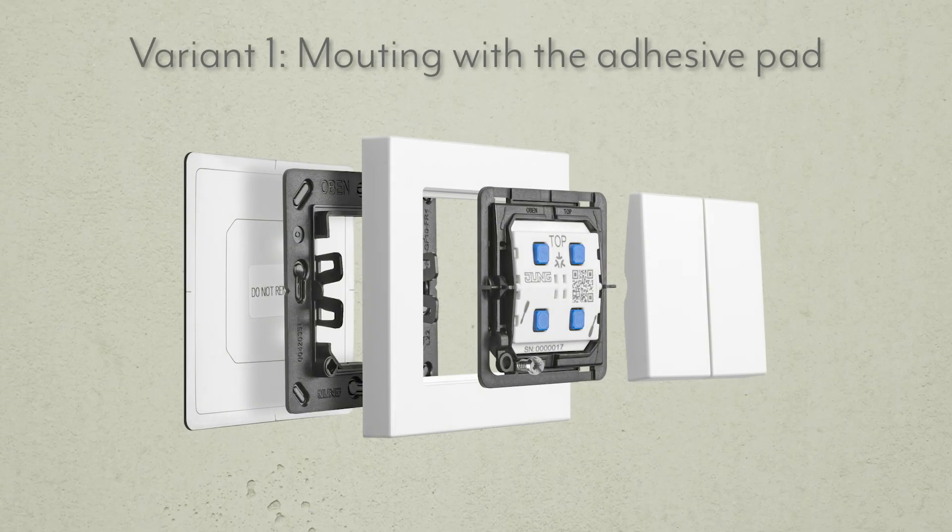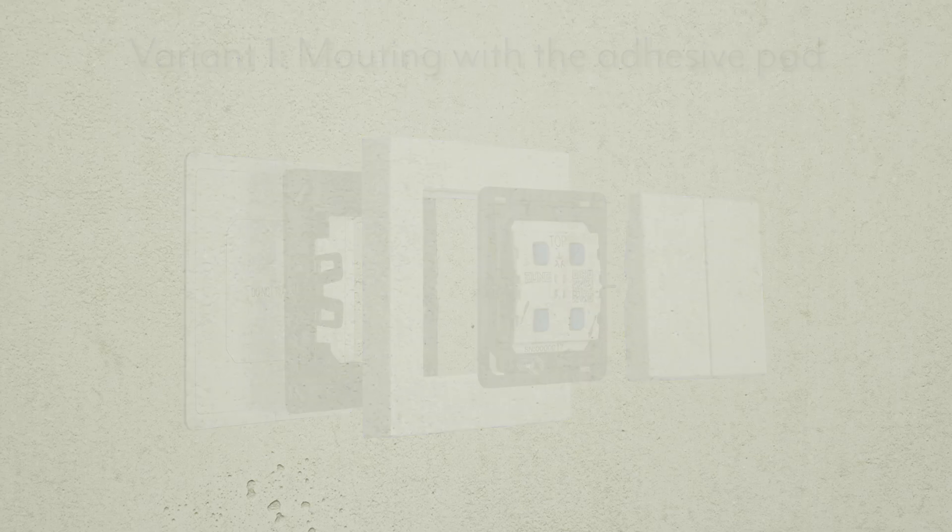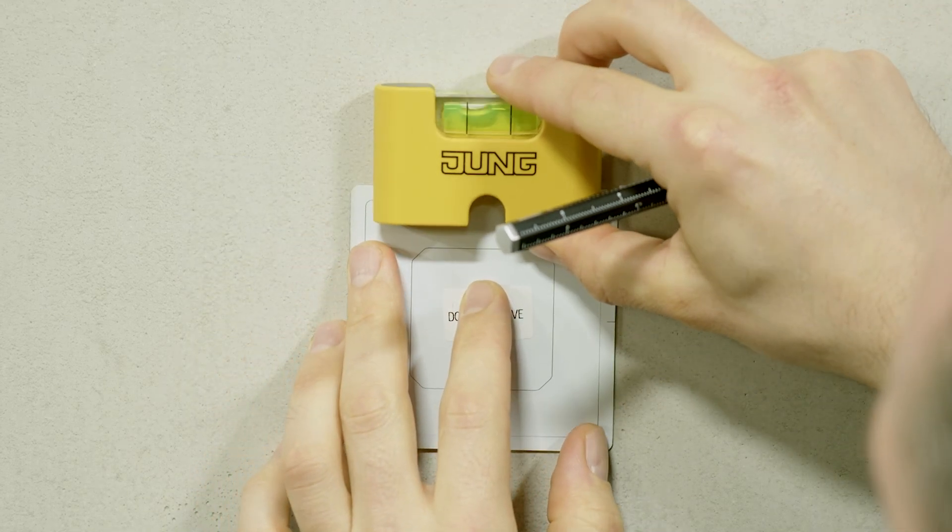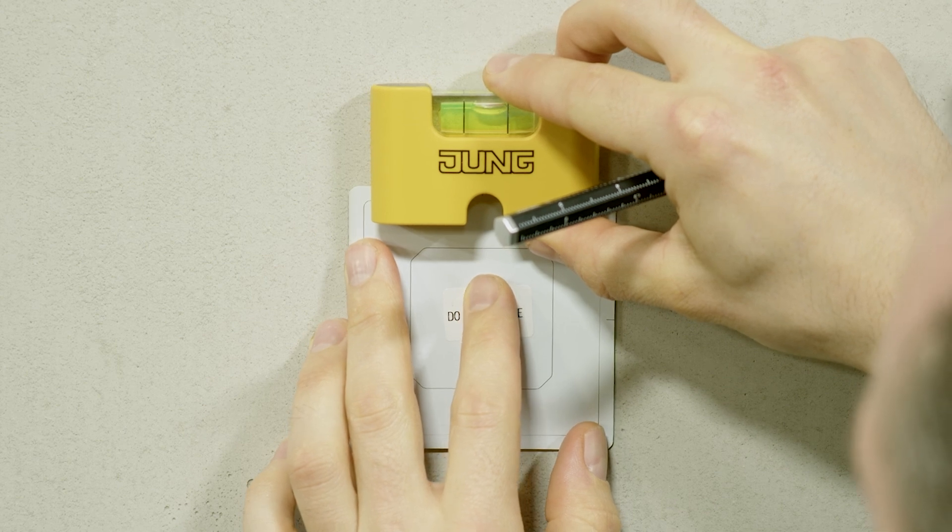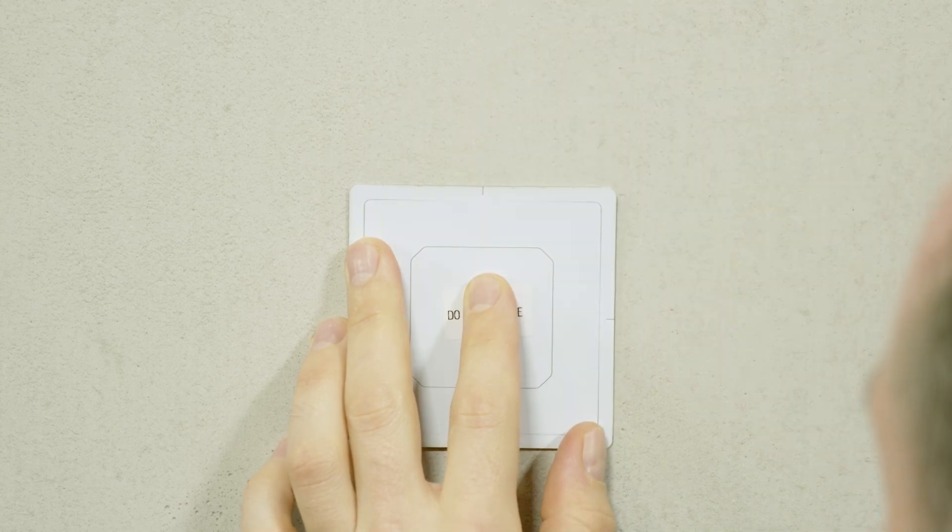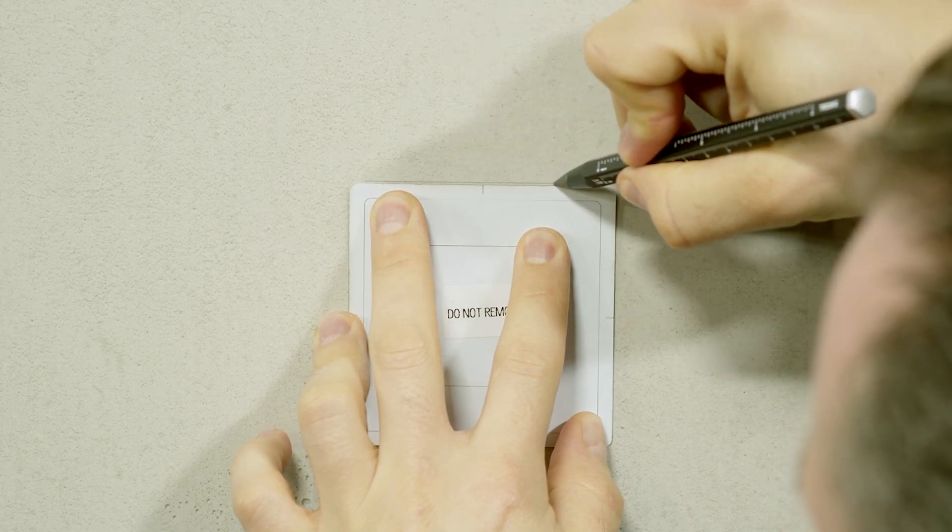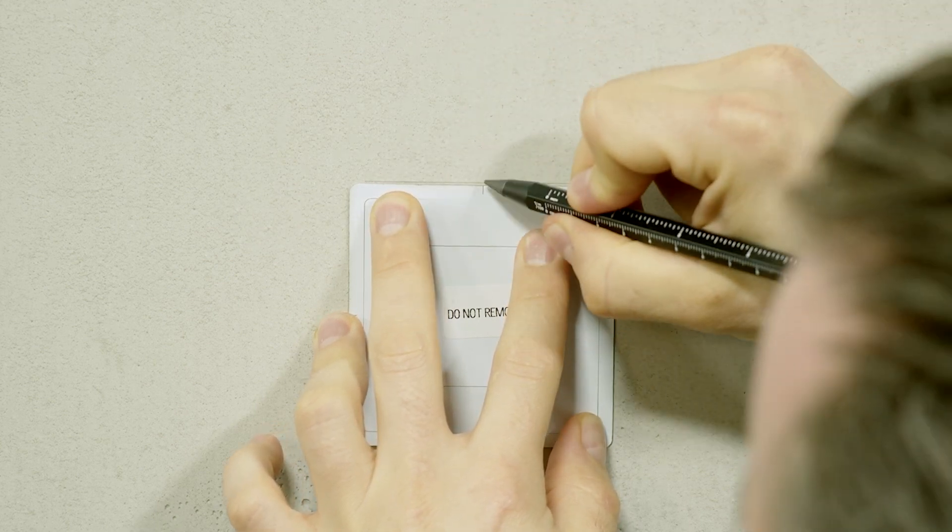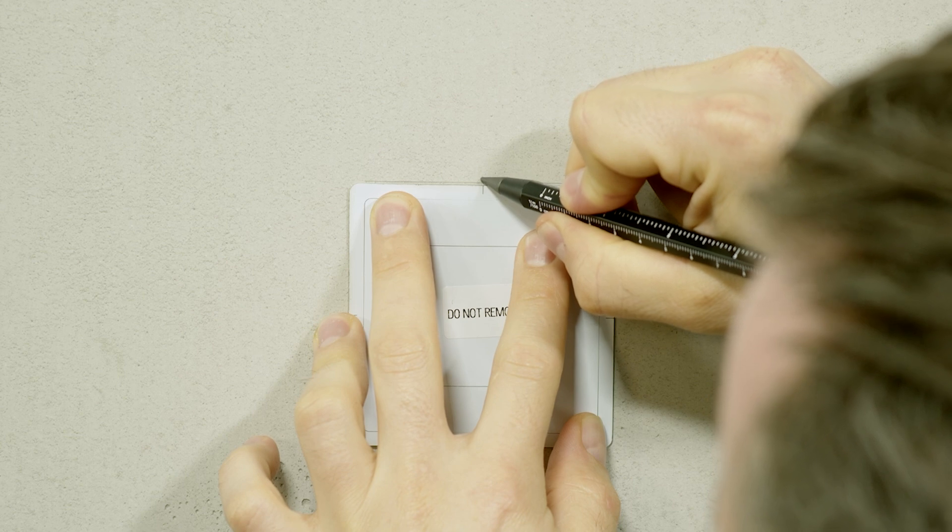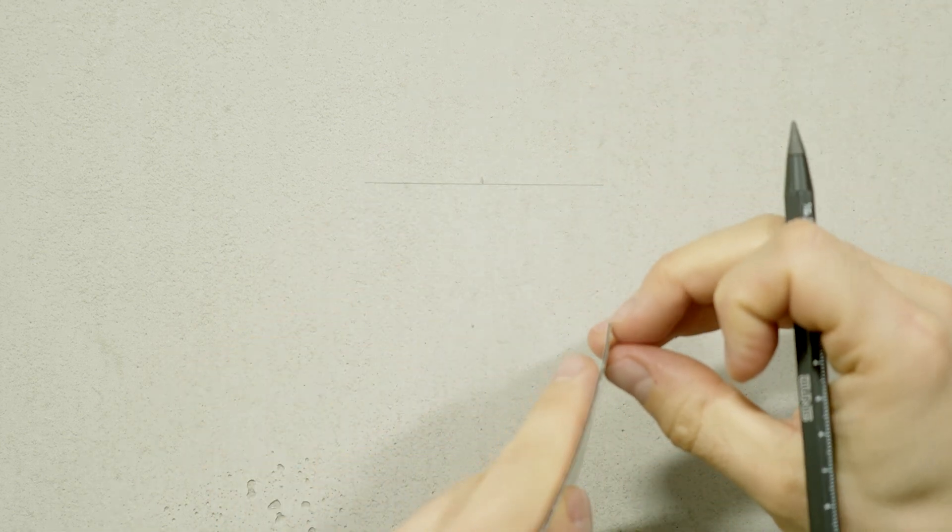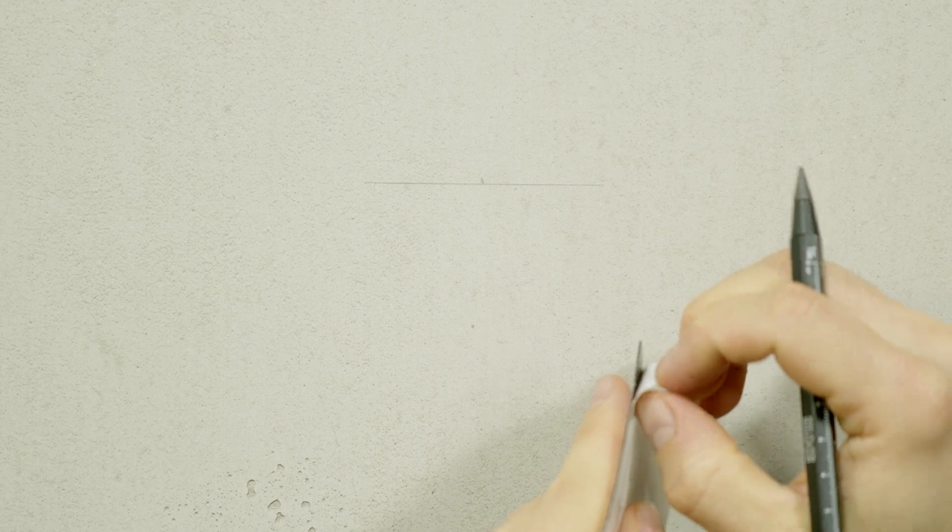Variant 1. Mounting with the adhesive pad. You can quickly and easily attach the META push button to any flat surface. Align the adhesive pad with a surface on which you want to place the push button. Marking lines help you to align the adhesive pad optimally.